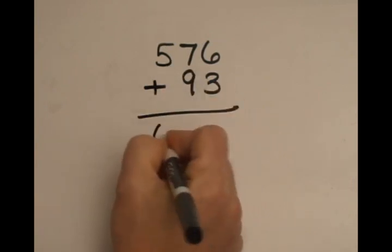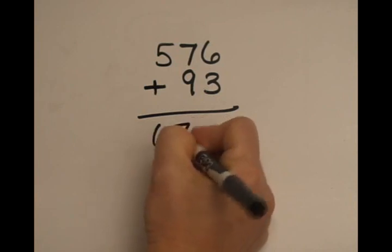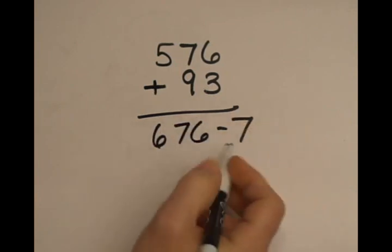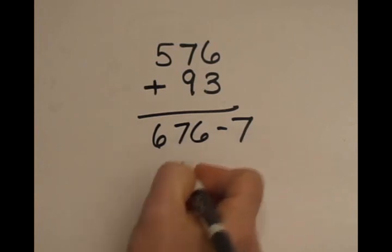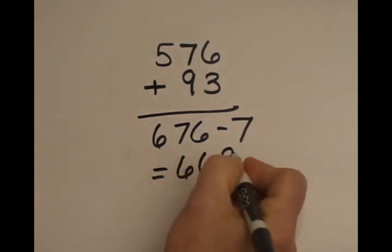So I can write down in my head, I would write 676 minus 7, and I can see that the 7 is slightly more. There's going to be a carry here. My result is going to be 669.